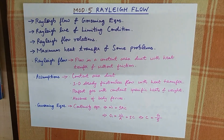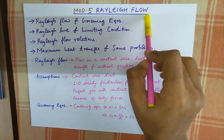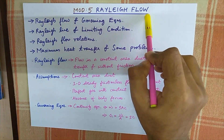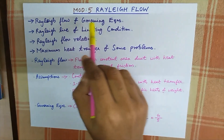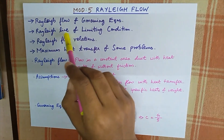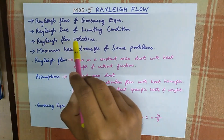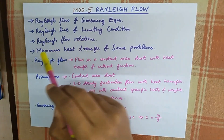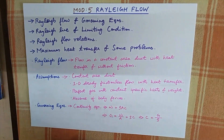Welcome to part 1 video lecture of CFF module 5. Module 5 will cover Rayleigh Flow. The topics we will discuss are: Rayleigh Flow and Governing Equations, Rayleigh Line and Limiting Condition, Rayleigh Flow Relations, Maximum Heat Transfer and Problems. So let's start.